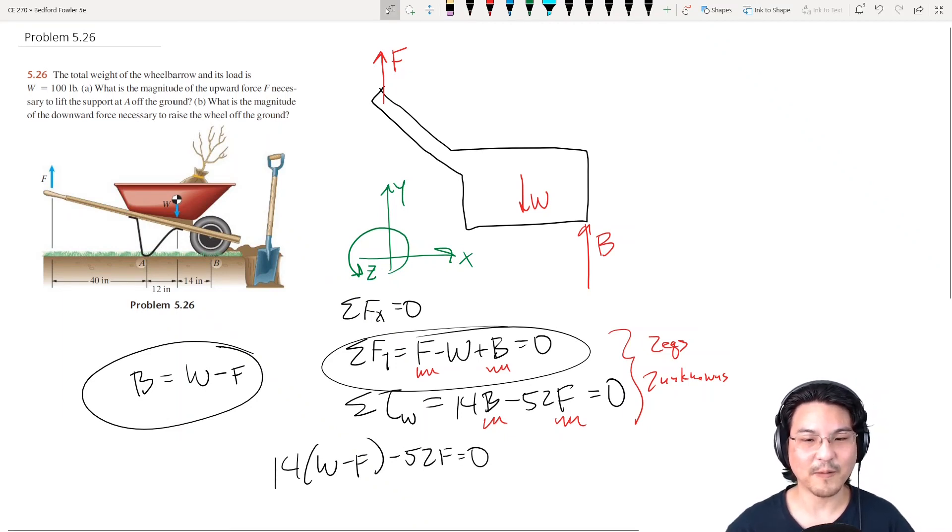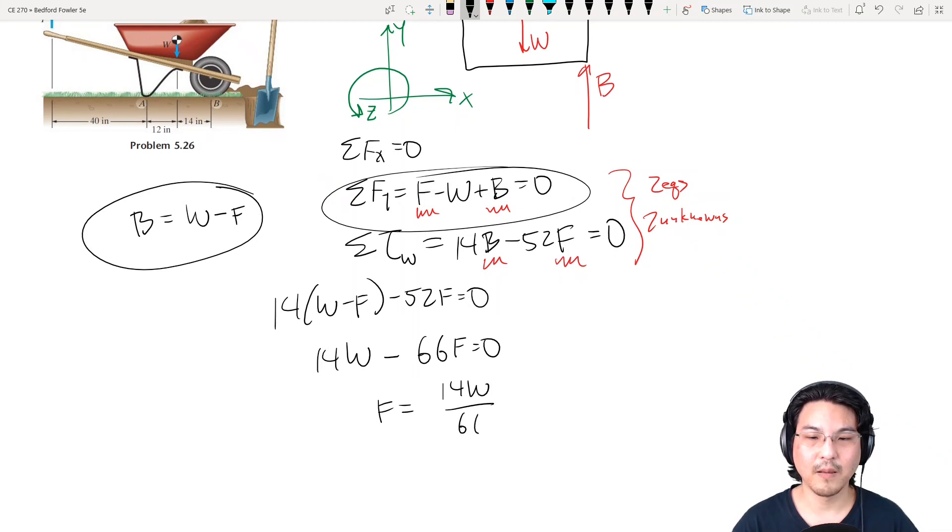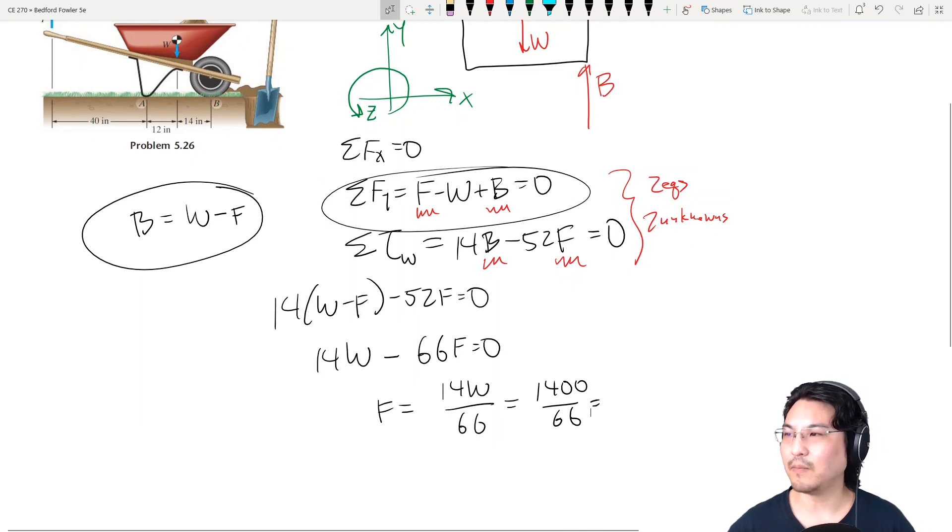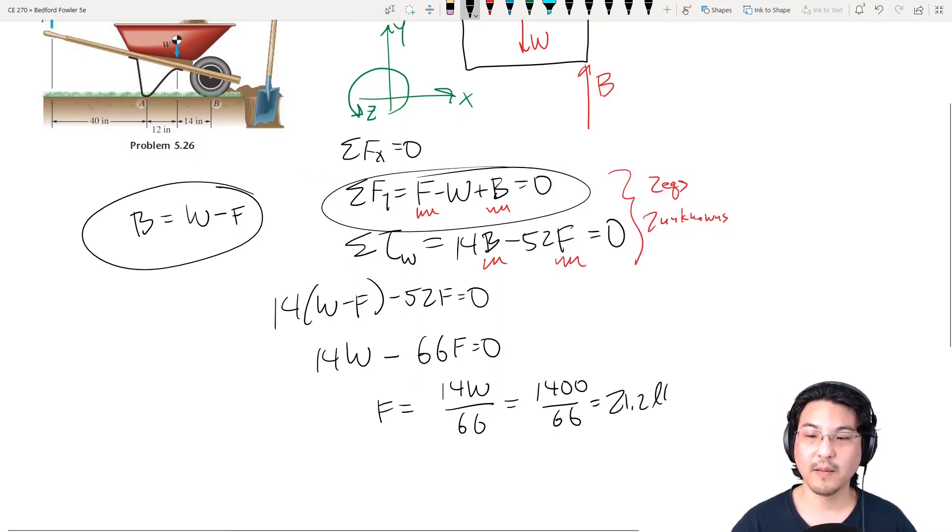And then take that and put it here. Okay, now I can solve for F. So this would be 1,400 over 66. 21.2.